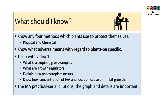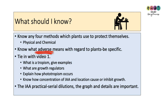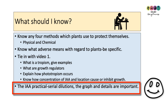At the end of this video you need to know four methods which plants use to protect themselves — a mix of physical and chemical adaptations. Know what 'adverse' means: it means harsh. Give specific examples for plants, such as extremely high temperatures or drought. Tie all this information in with video number one, and also study the IAA practical.